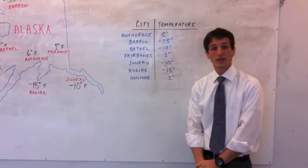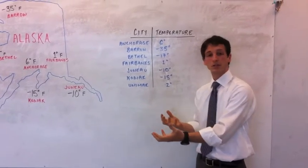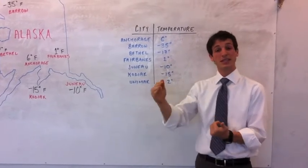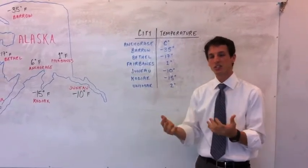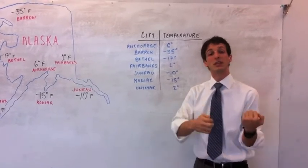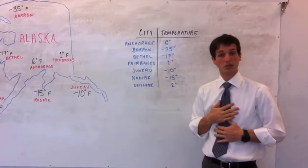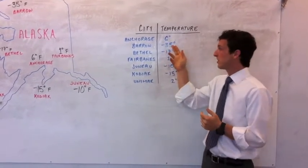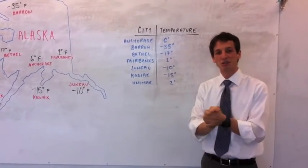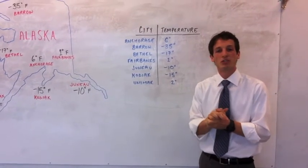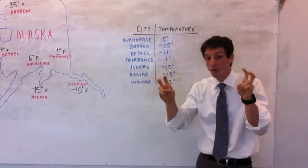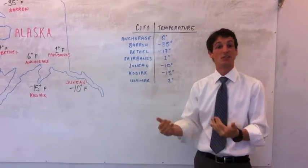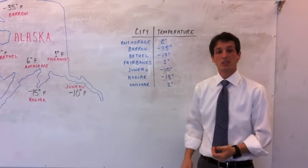Now what you'll be given is a list of numbers. And the question will say, please order these integers from least to greatest. Now instead of thinking of it from ordering them from least to greatest, what I would do is imagine yourself in a state like Alaska and that those numbers aren't actually numbers, but they're degrees of Fahrenheit. And what you're going to want to do is order them from coldest to warmest, even though the question is asking for least to greatest. So let's do that now.